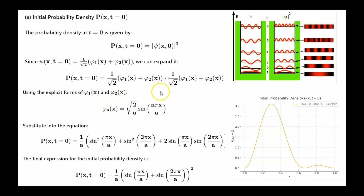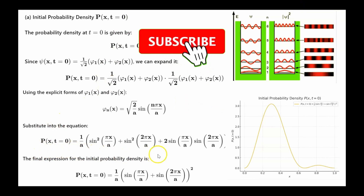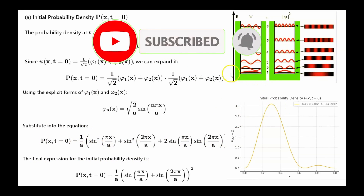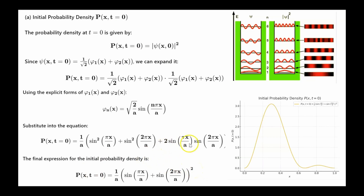If we use the explicit form of phi for this potential — the infinite square well potential — we get the probability distribution as a specific function, where A is the width of the box. This expression can be written in a more compact, aesthetically pleasing form. This is a plot of the probability density for A equal to 1. At time t equals 0, the particle will likely be found in one region of the box, will never be found at certain locations, and will have a small probability of being found elsewhere.